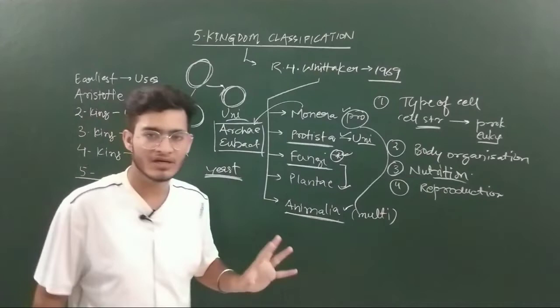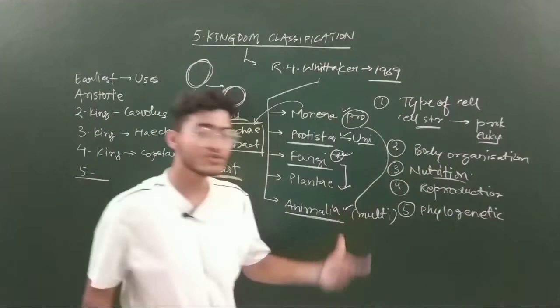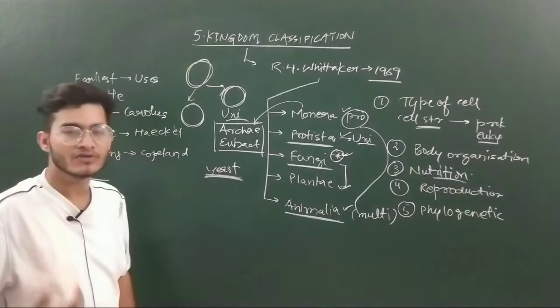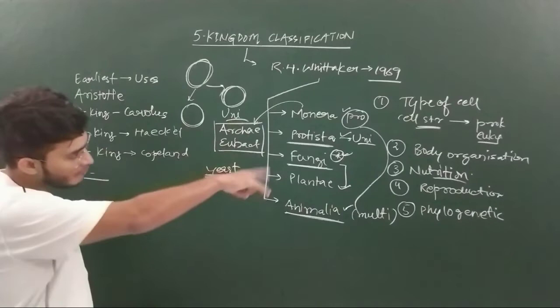Whittaker also considered phylogenetic relationships - the evolutionary relationships were taken into consideration. On the basis of which organisms are evolutionarily related, some important categories were made according to Whittaker in 1969, and those important categories were Monera, Protista, Fungi, Plantae and Animalia. These are the important characters.